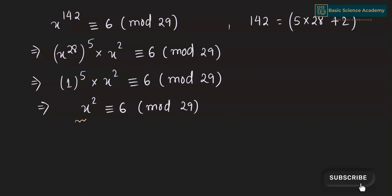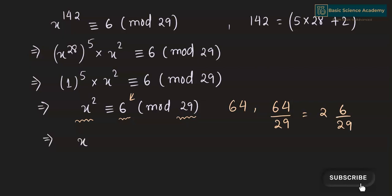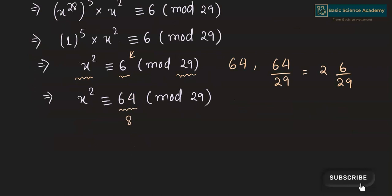Since we have x squared on the left side, in order to factorize this equation, we need a perfect square in the place of the remainder 6. The perfect square nearest to 29 that gives a remainder of 6 is 64, because when you divide 64 by 29, it gives a remainder of 6. Hence, we can write this equation as x squared is congruent to 64 mod 29. And 64 equals 8 squared.